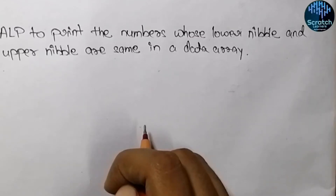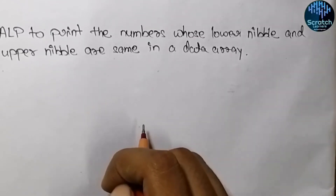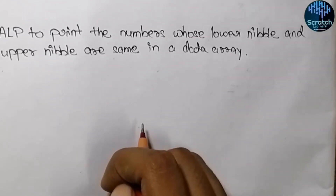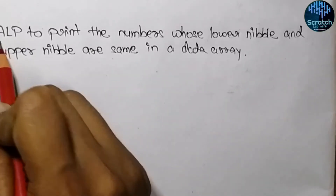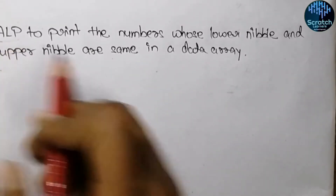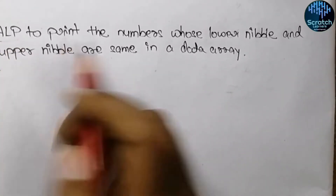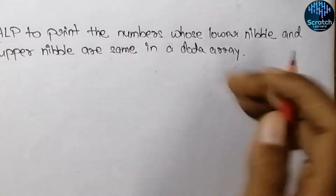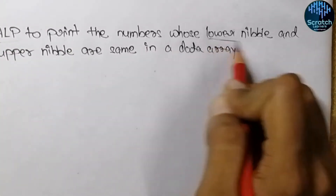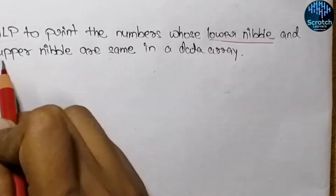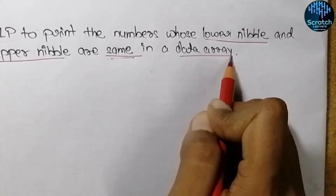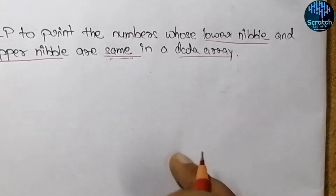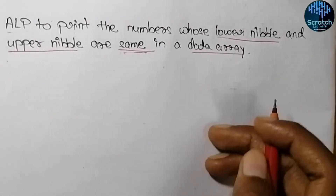Hello everyone and welcome back to our YouTube channel Scratch Learners. In this video we will see the assembly language program to print out the numbers whose lower nibble and upper nibble are same in a data array.